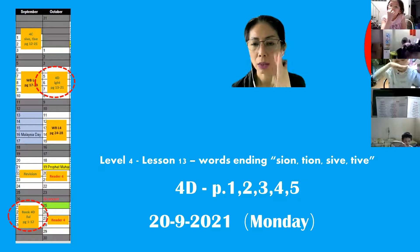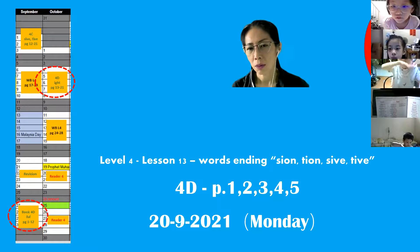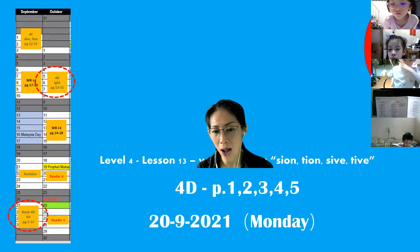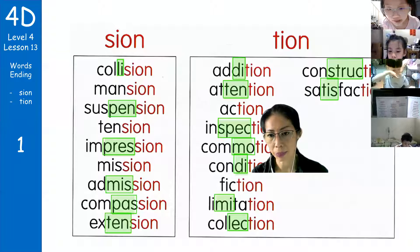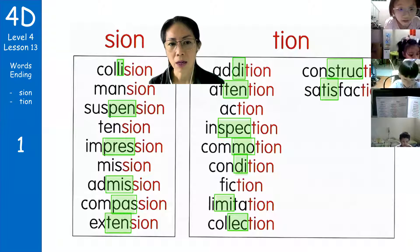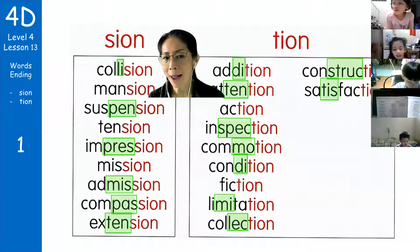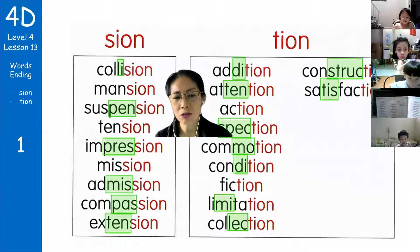Good afternoon children. Today we do phonics book, from page one until five. Follow teacher to read: sion, collision, mention, suspension, tension.